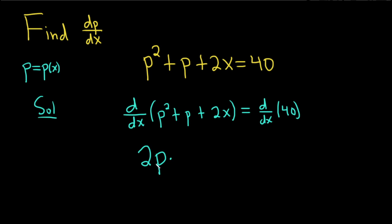times the derivative of the inside. That's the chain rule—the inside function is p, and its derivative with respect to x is dp/dx, plus the derivative of p with respect to x, which is just dp/dx. The derivative of 2x with respect to x is just 2, and the derivative of 40 is 0.